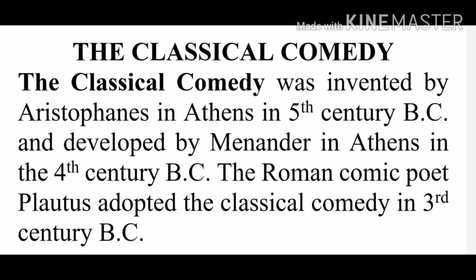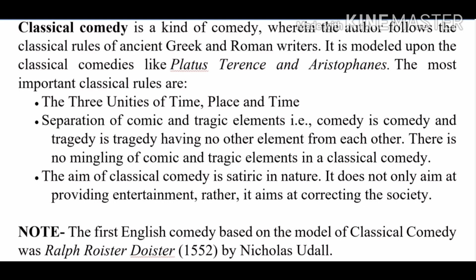The classical comedy was invented by Aristophanes in Athens in the 5th century BC, and developed by Menander in Athens in the 4th century BC. The Roman comic Plautus adapted the classical comedy in the 3rd century BC. The first English comedy based on this Greek model was Ralph Roister Doister, written around 1552 by Nicholas Udall. The classical comedy follows the rules of dramatic composition as laid down by the ancient Greek and Roman masters, including the observance of the three unities of time, place and action.